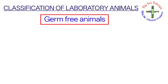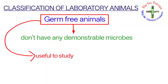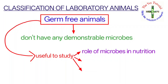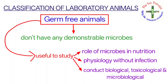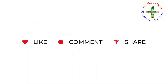Fourth is germ free animals. An animal which does not have any demonstrable microbes is known as a germ free animal. These animals are useful to study the role of microbes in nutrition, to study physiology without infection, and to conduct biological, toxicological, and microbiological studies. This concludes the classification of laboratory animals.